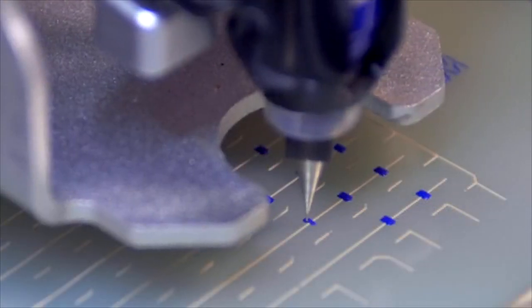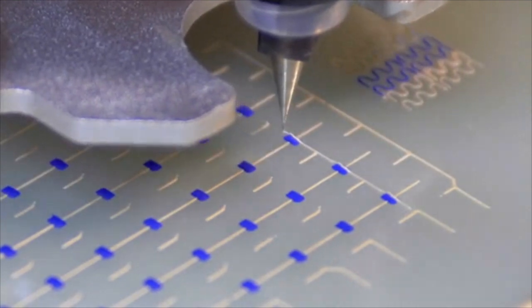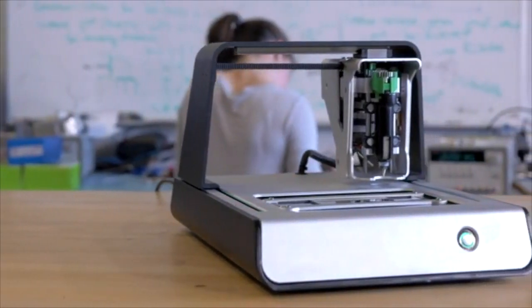We use conductive and insulating ink to create fully functional two-layer circuit boards without ever having to email files around or wait for the FedEx truck. But this is so much more than just a prototyping tool. It can help you in any stage of development.